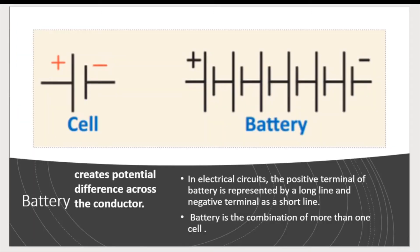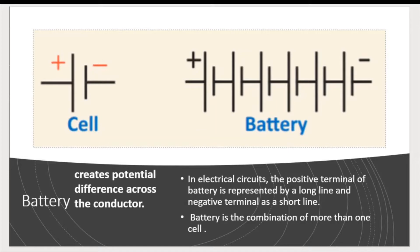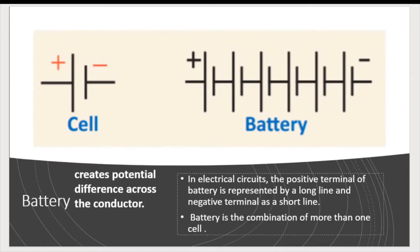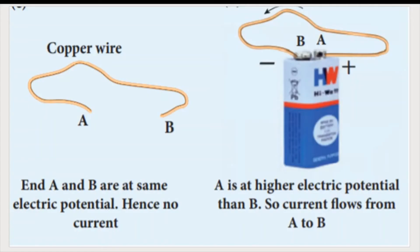In an electric circuit also, we need some potential difference. The battery is the device which is used to create the potential difference across the conductor. In the circuit symbol, the positive terminal of the battery is represented by a long line and the negative terminal is represented by a short line.